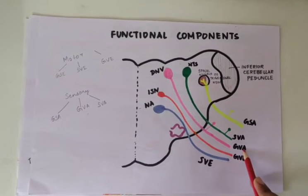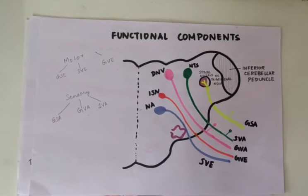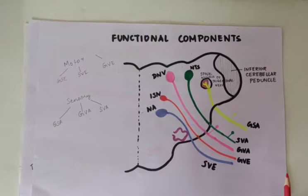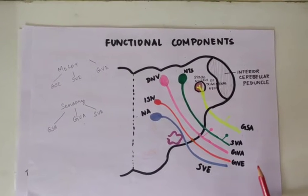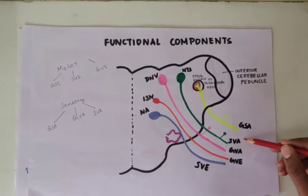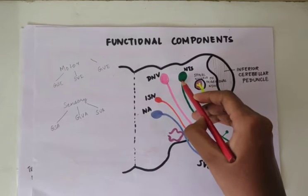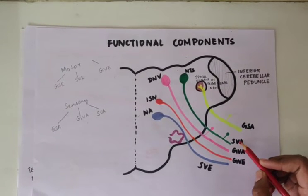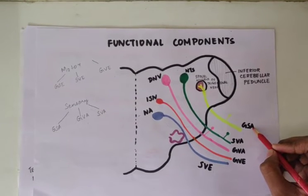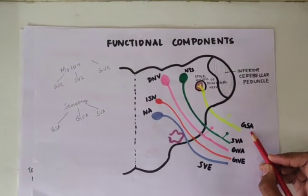GVA — general visceral afferent — arises from the dorsal nucleus of the vagus and conveys pain, touch, and temperature from the mucous membrane of the pharynx, tonsil, soft palate, and posterior one-third of the tongue. SVA — special visceral afferent — terminates in the nucleus tractus solitarius and is responsible for taste sensation from the posterior one-third of the tongue. GSA — general somatic afferent — terminates in the spinal nucleus of the trigeminal nerve and is responsible for proprioceptive sensation from the stylopharyngeus muscle and skin of the auricle.